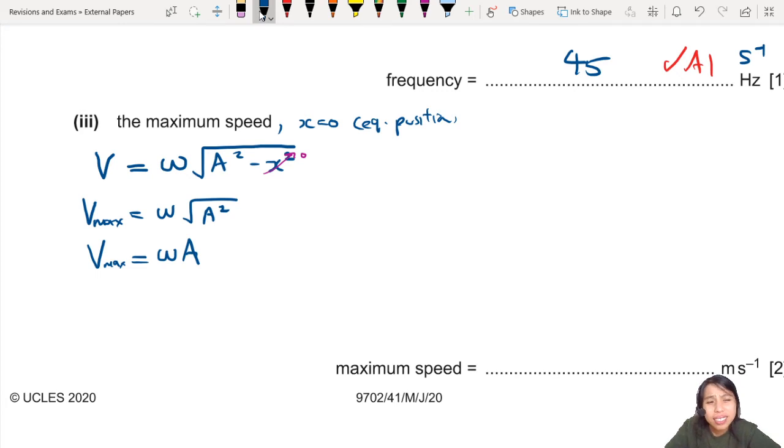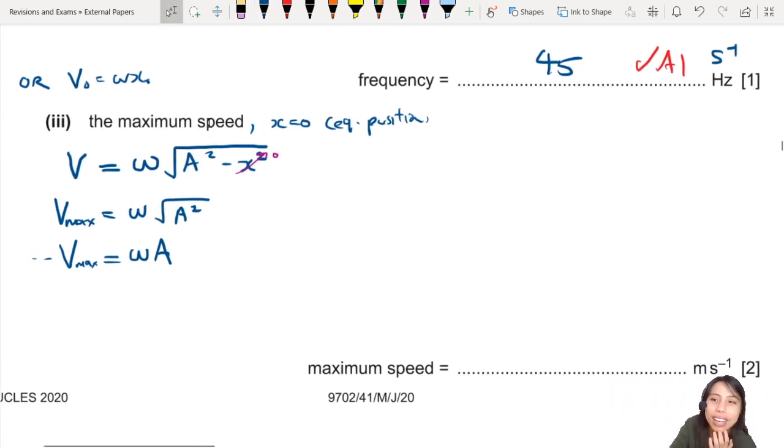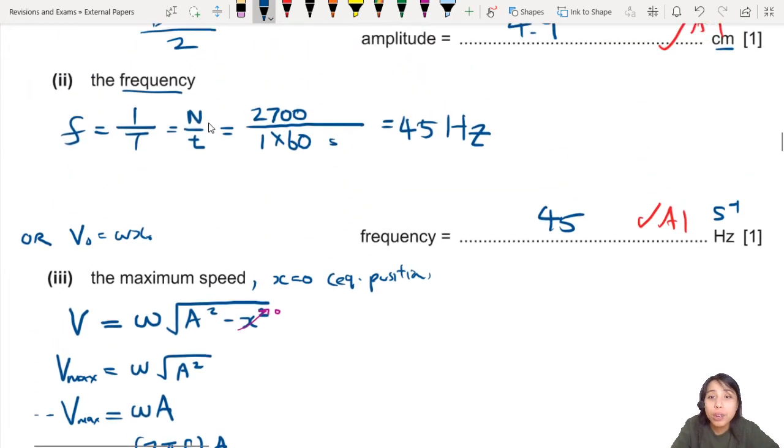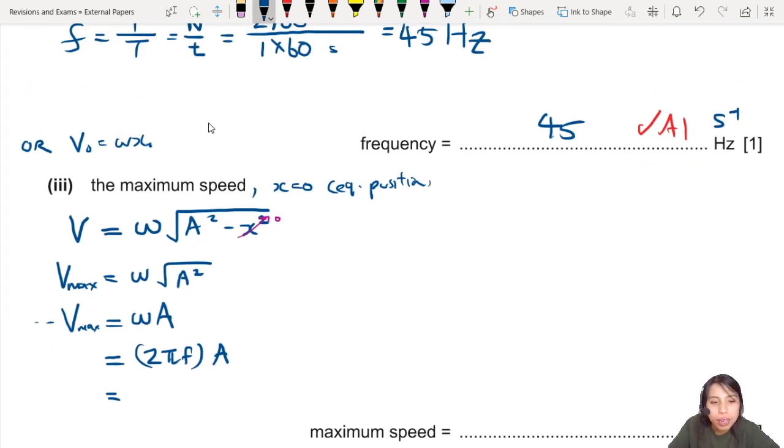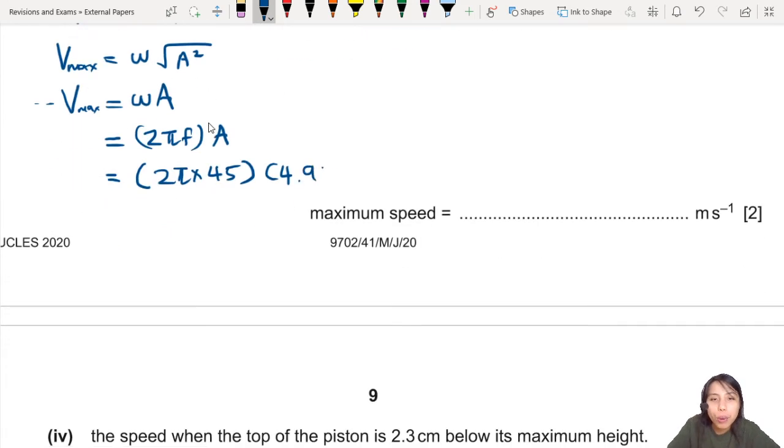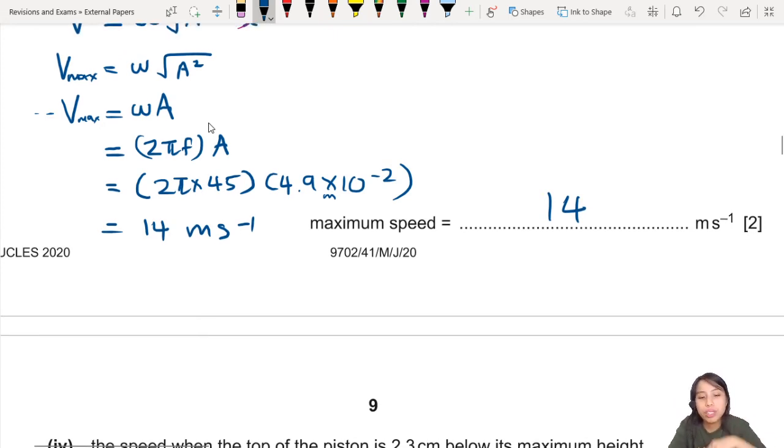So then V_max will be ωA. What happened to the x? Gone, it is zero. So this simplifies to ωA. Let's plug in all the values we know. Do we know omega? No, but we could find it by 2πf because omega is 2πf. This will give us 2π times 45 hertz, amplitude is 4.9 cm. Please remember to convert cm to meters, so 4.9 × 10^-2 meters. In the end, you can get a value of about 14 meters per second.